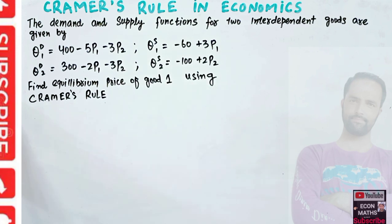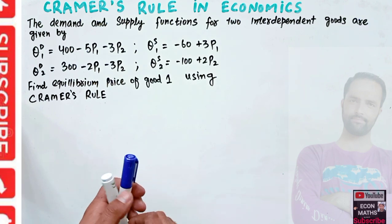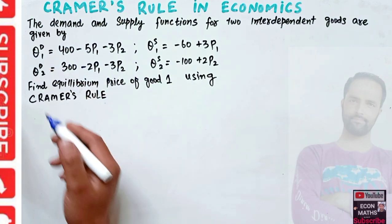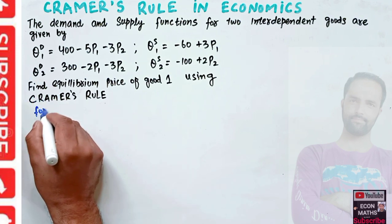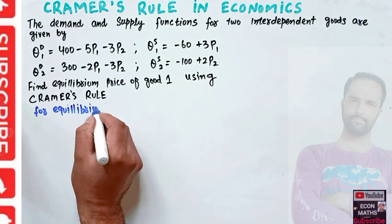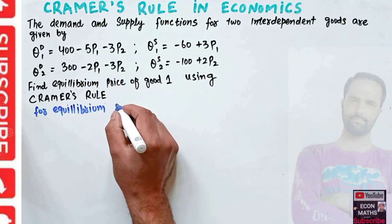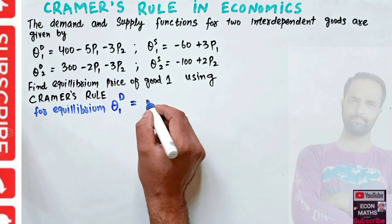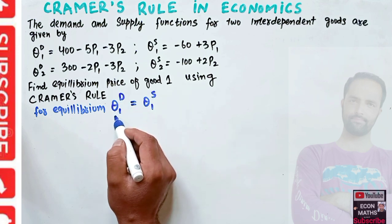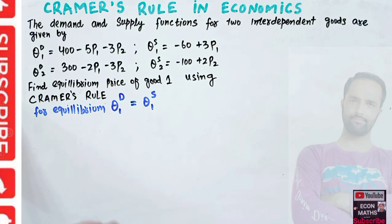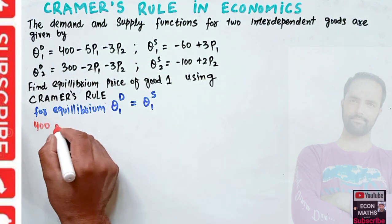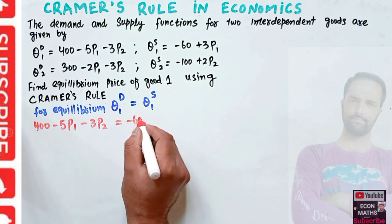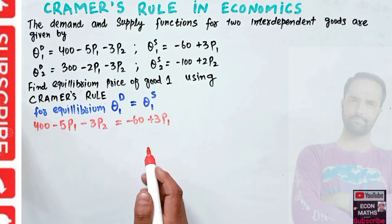We need to find the equilibrium price of Good 1 using Cramer's Rule. First, let us find the equilibrium conditions for both goods. For equilibrium in the first market, demand must equal supply: Q1d = Q1s. That gives us 400 − 5P1 + 3P2 = −60 + 3P1.